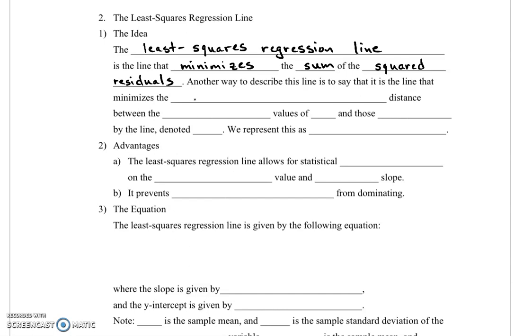Another way of explaining this is to say that the least squares regression line is the line that minimizes the squared vertical distance between the observed value of y, the response variable, and those predicted by the line.